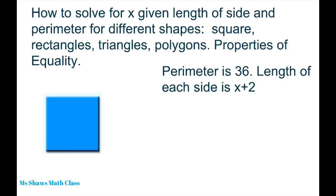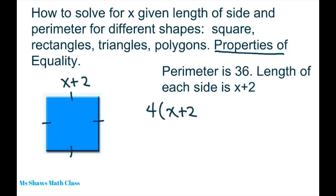So for example we have a square. All the sides on a square are equal and it says the length of each side is X plus 2. Basically on these problems what we want to do is solve for X. At the very end of the video I'm going to go over properties of equality because you'll be doing proofs in geometry and you have to justify every step. So the perimeter is 36. Remember the perimeter is just adding all the sides. Since we have 4 equal sides that's 4 times X plus 2, and that perimeter equals 36.